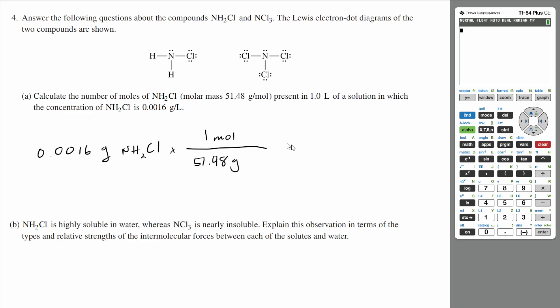That's per one mole. And if you do out the math on that, 0.0016 divided by 51.48, that is about 3.1 times 10 to the negative 5 moles. And that is your answer.